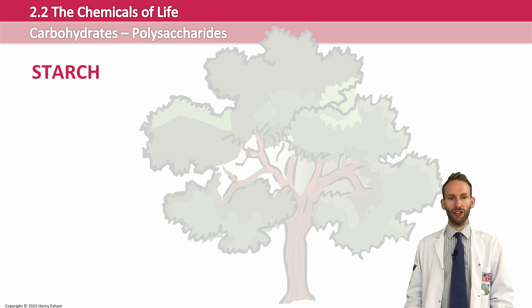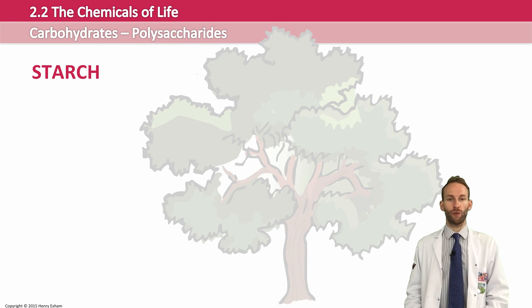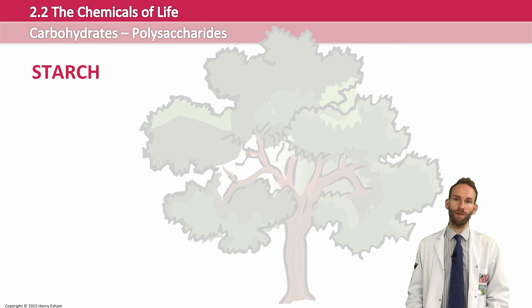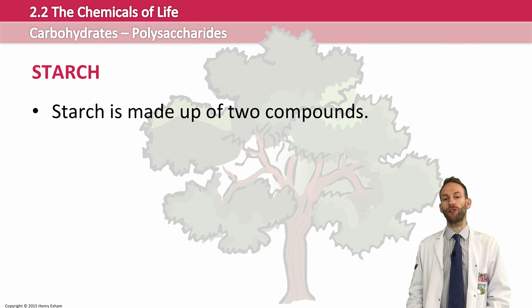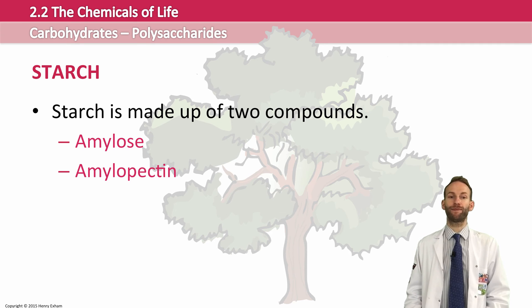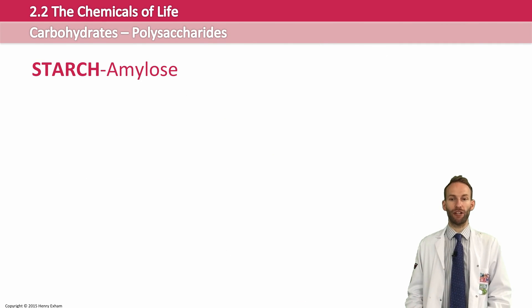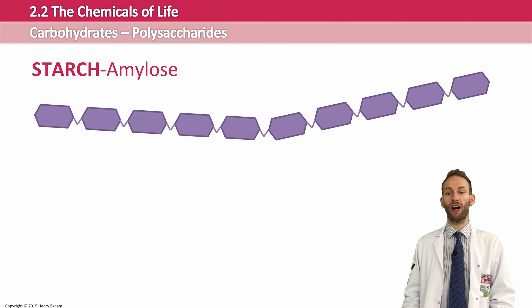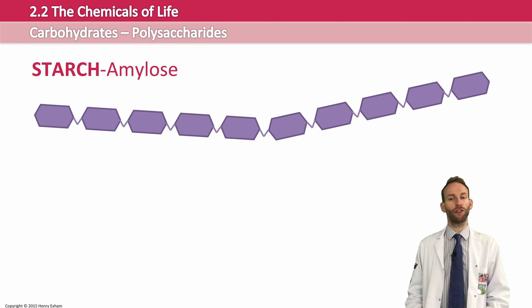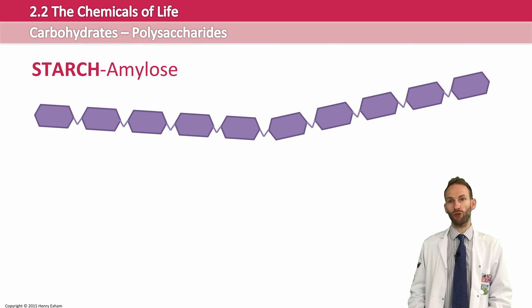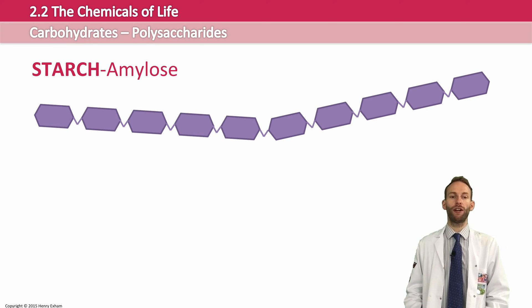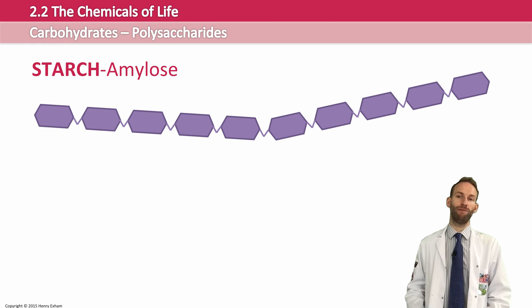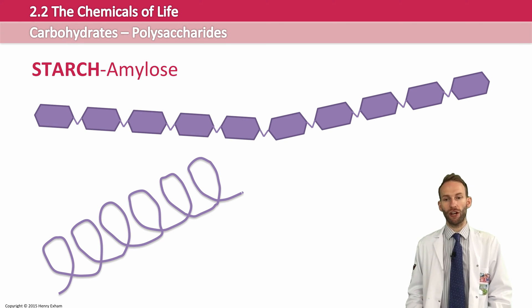Starch is the energy store used by plants. When a plant makes glucose in photosynthesis, it stores this glucose as starch because it's insoluble and compact. Starch is actually made up of two compounds: amylose and amylopectin. Amylose is a long chain of between 200 and 5,000 alpha glucose molecules, all joined together by 1,4 glycosidic bonds. Because they're joined by 1,4 glycosidic bonds, the molecule bends slightly at each bond and starts to coil, meaning that amylose is a spiral.